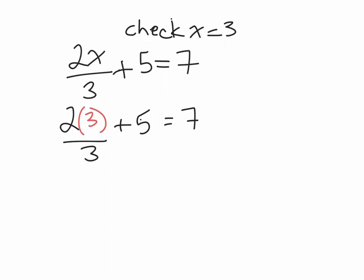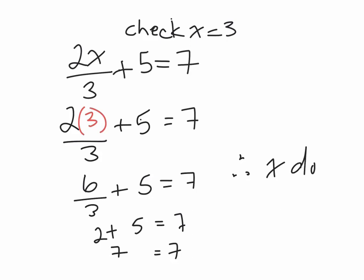So the first thing I do is I multiply 2 by 3 to get 6. Alright, 6 divided by 3 is 2. And I know that 7 equals 7. Therefore, x does equal 3. Alright, so let's try another.